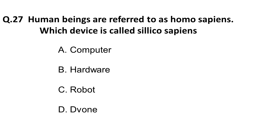Question 27: Human beings are referred to as Homo sapiens. Which device is called Silico sapiens? Options: A) computer, B) hardware, C) robot, D) drone. The correct answer is A: computers are called Silico sapiens.